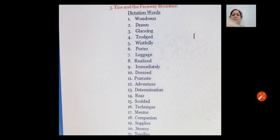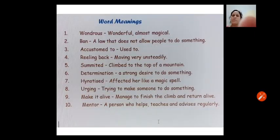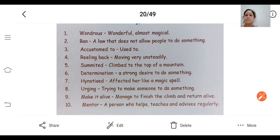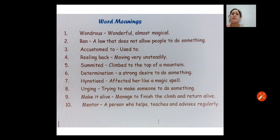Let us begin with the word meanings of this chapter. Number 1, Wondrous means wonderful, almost magical. Number 2, Ban means a law that does not allow people to do something. Number 3, Accustomed to means used to. Number 4, Reeling back means moving very unsteadily. Number 5, Summited means climbed to the top of the mountain. Number 6, Determination means a strong desire to do something.